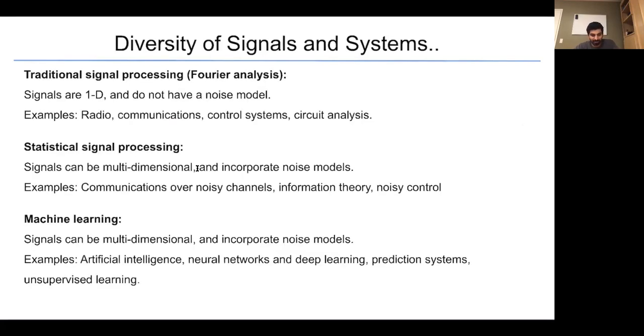So here are three examples. The first is traditional signal processing or Fourier analysis. Signals here are one-dimensional and do not have a noise model. So for example, I might have a signal. Here I have time. Here I have the amplitude. And I have some signal here, x of t. And I can look at this value, let's just call it t naught, and I can actually get a value here, x of t naught. This is a traditional signal processing problem. Signals are one-dimensional, do not have a noise model. They show up in radio, comms, control systems, circuit analysis.